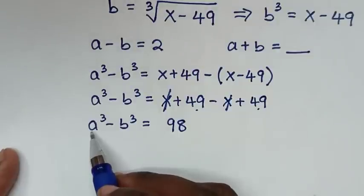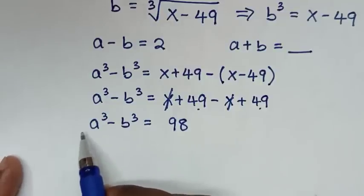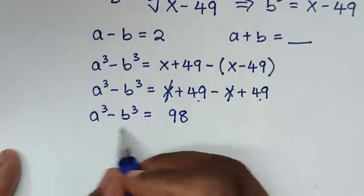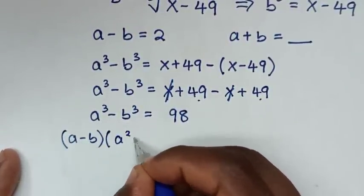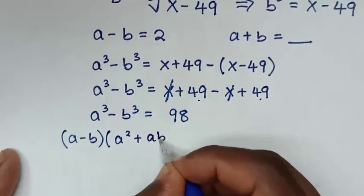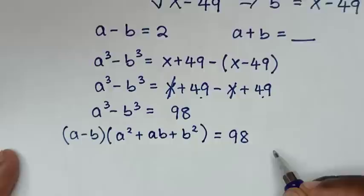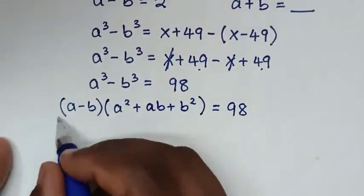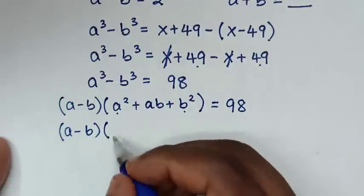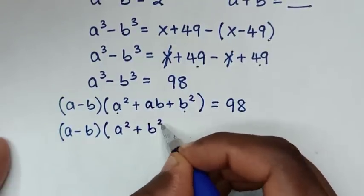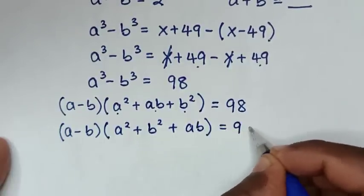Now a³ minus b³ is in the form of a difference of cubes, so we apply the rule: a³ - b³ = (a - b)(a² + ab + b²). This gives us (a - b)(a² + b² + ab) = 98.